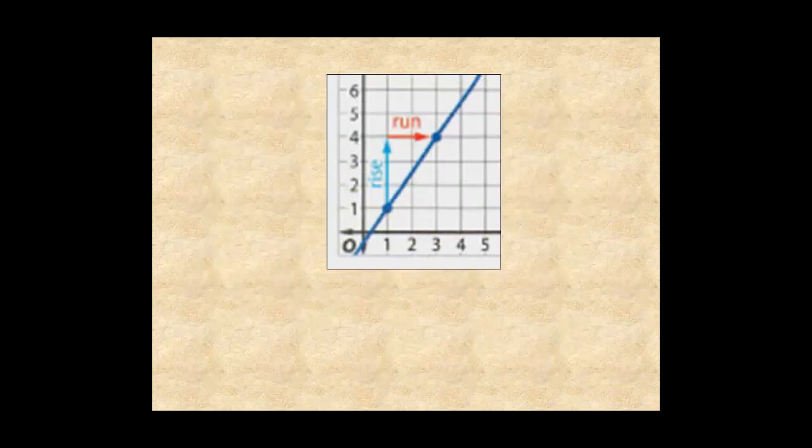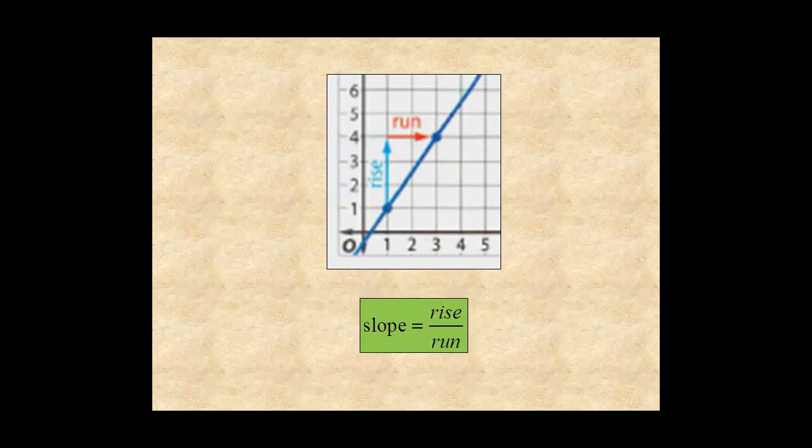You can also find the slope of a line directly from the graph. Between any two points, the slope of the line is the vertical distance between the points, called the rise, divided by the horizontal distance between the points, called the run.